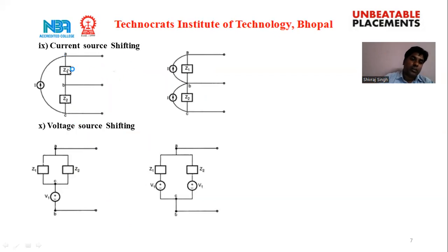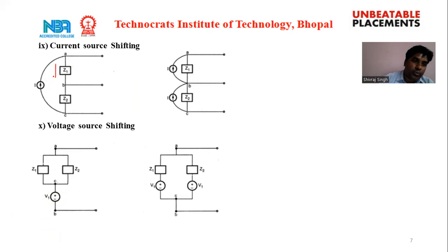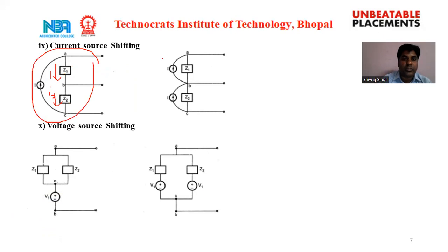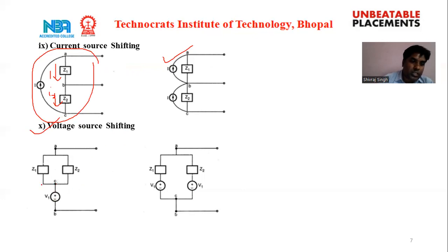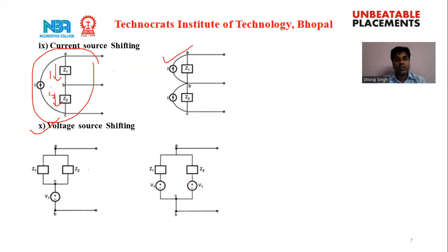The ninth rule is current source shifting. If current I flows through resistances, the same current flows across each resistor, so this combination can be replaced by an open circuit — yielding a parallel combination of I with Z1 and I with Z2. The tenth rule is voltage source shifting: if node voltage is V, the same potential appears across Z1 and Z2, so the combination can be replaced by V1 and Z2.